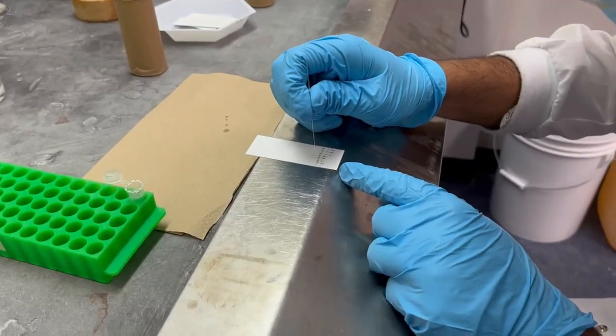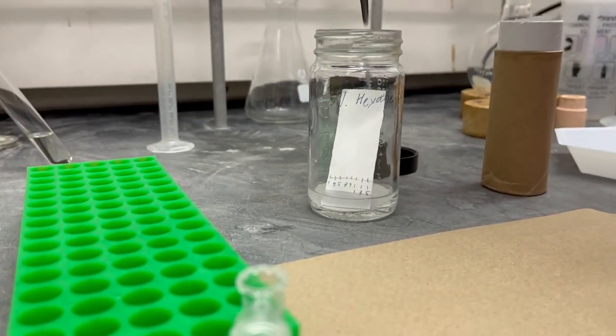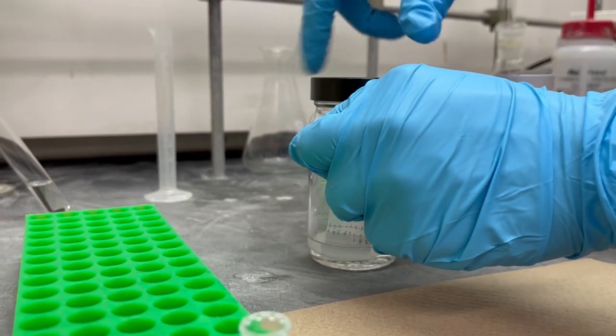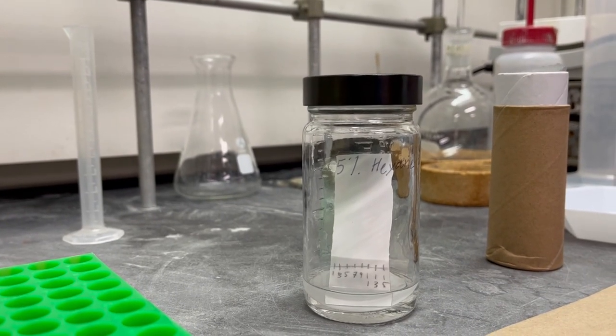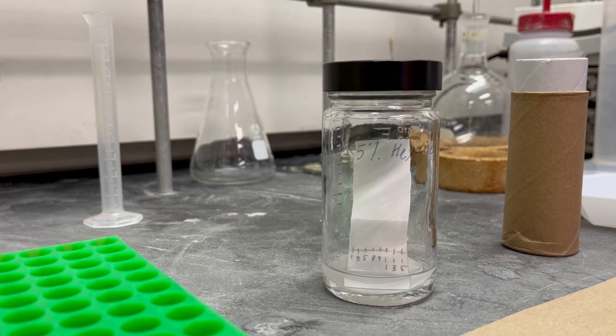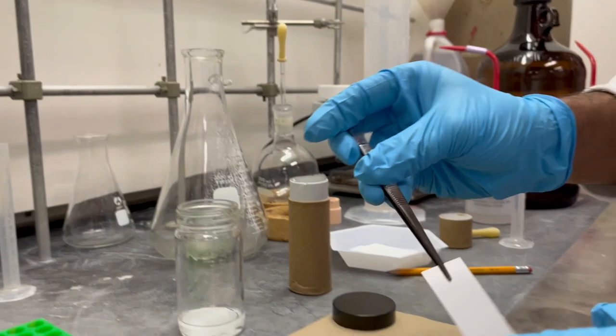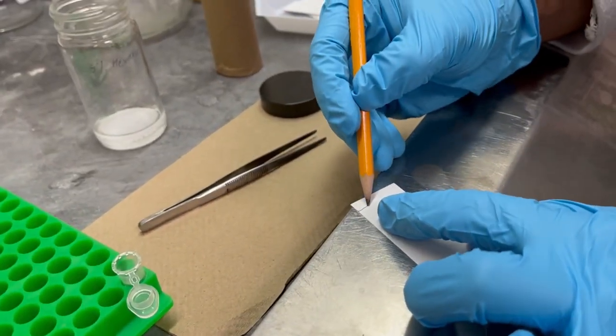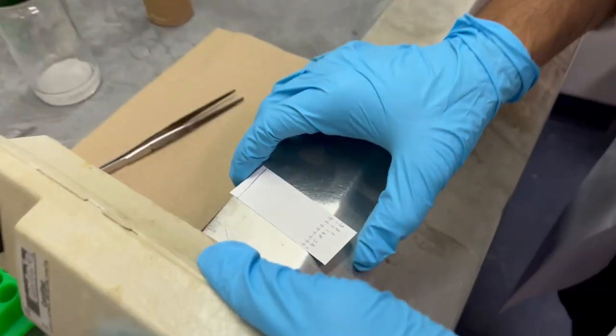Once all the spots are made, using tweezers, the TLC plate is carefully yet quickly placed in the chamber and closed. The solvent then migrates up the plate via capillary action. The compounds should also migrate depending on factors such as relative polarity. The plate is taken out and the solvent front is marked using a pencil before a final analysis.